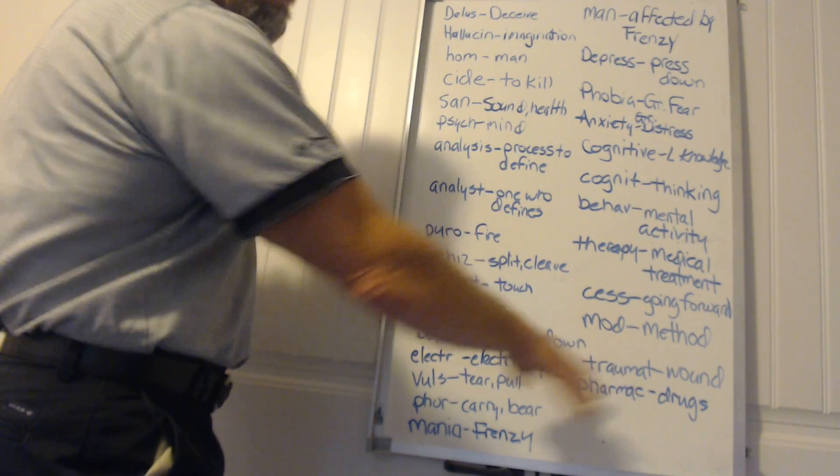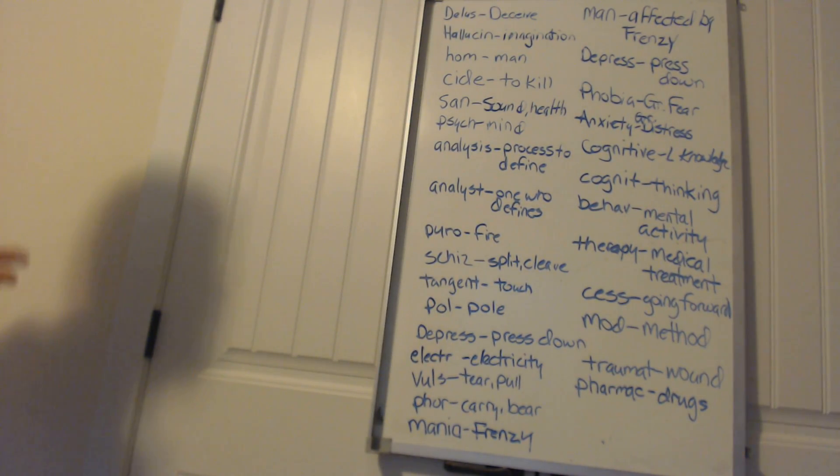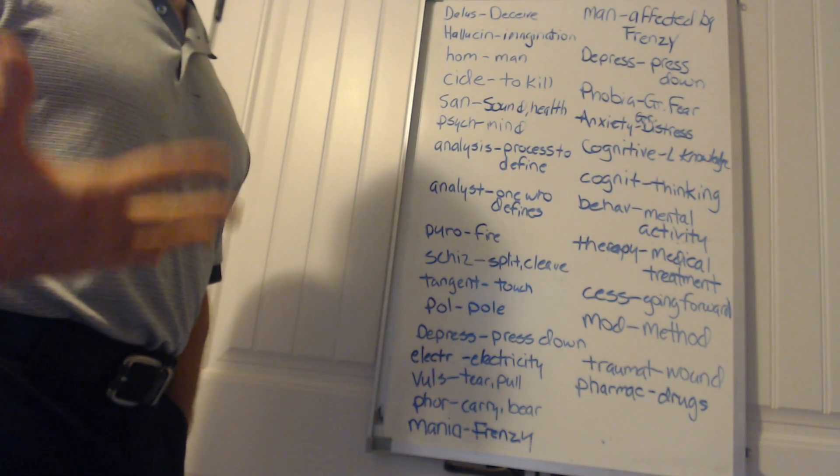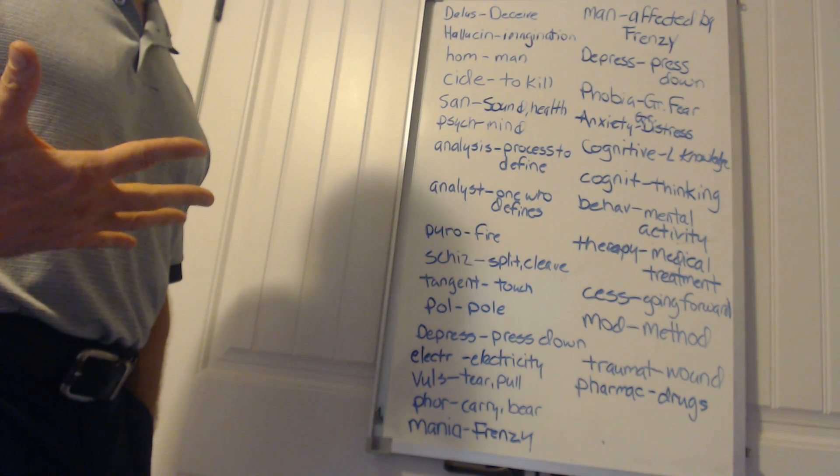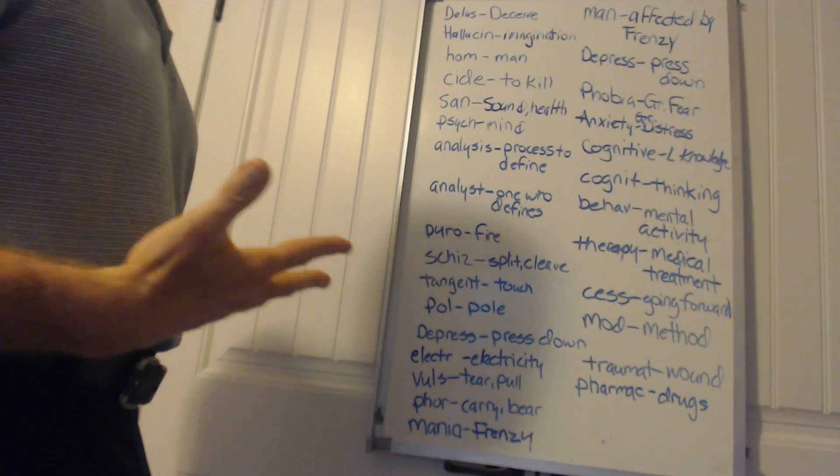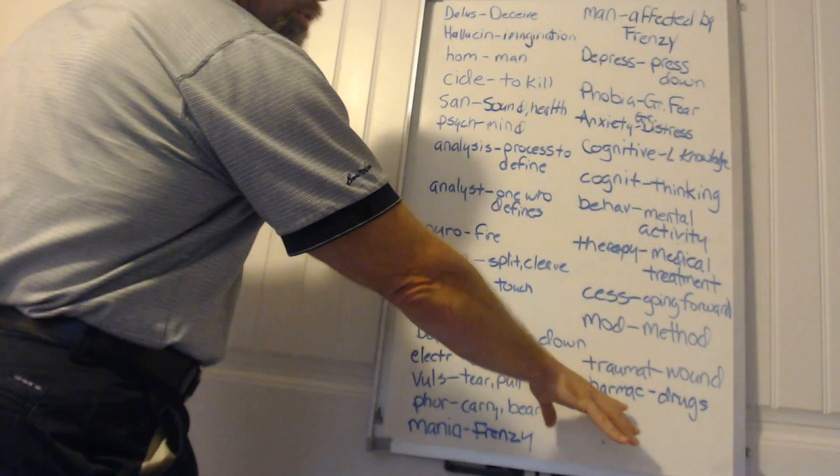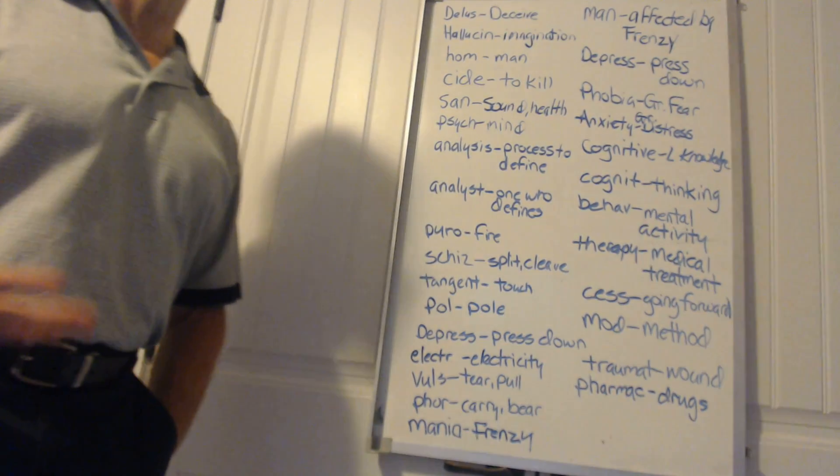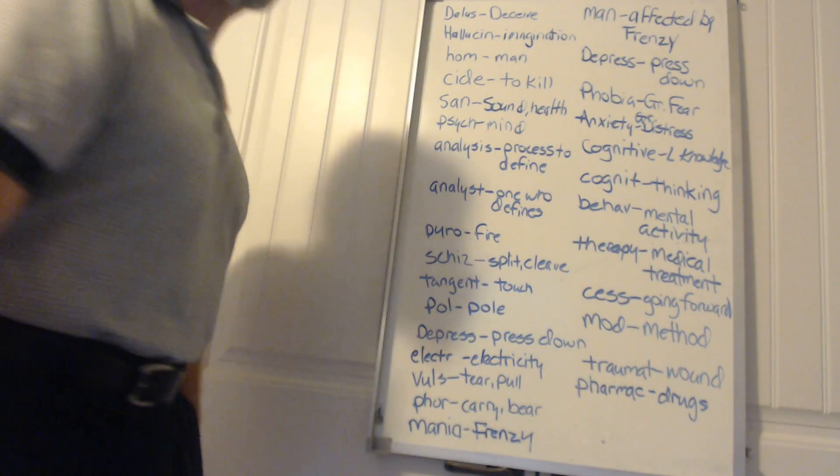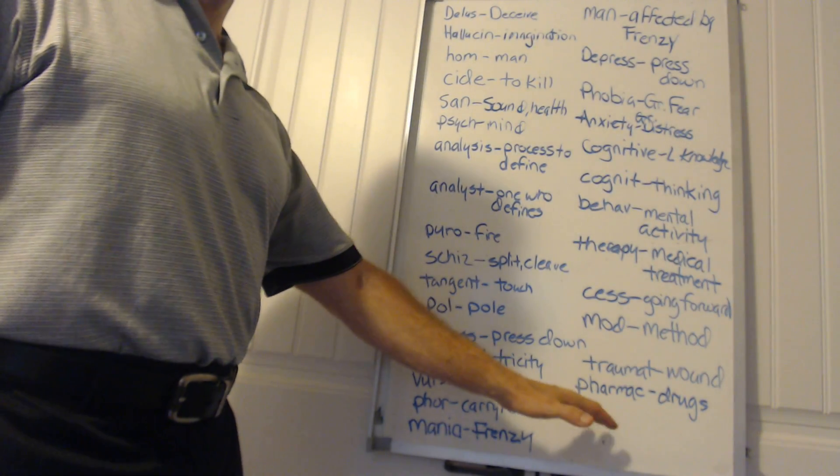Traumatic means wound. Somebody who has post-traumatic stress disorder - that would be a case where a wound, in this case a mental wound, leads to a mental issue that can't be overcome unless they go through treatment. Pharmac or pharmaco means drugs. In some cases, a disorder caused by trauma which leaves a wound might have to have a pharmacologic form of therapy used.